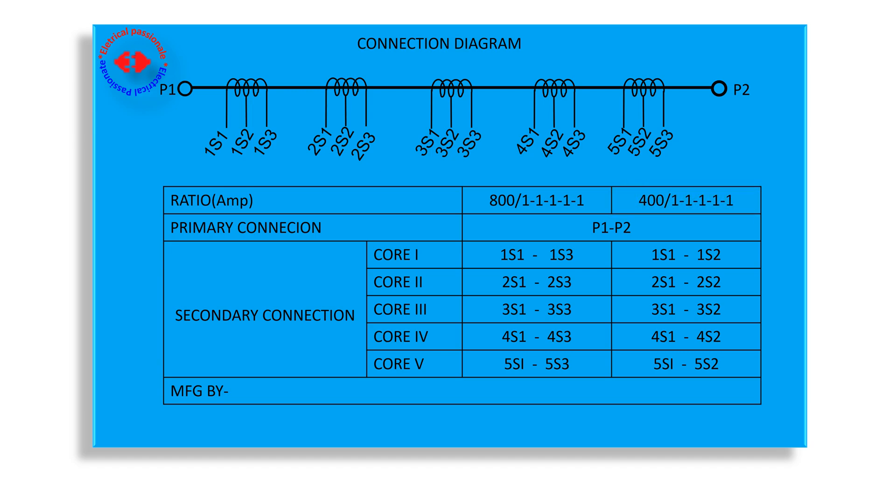Then, we have secondary terminals to connect the secondary core with particular ratio. For 800 ampere, we have to connect the CT secondary terminals to 1S1 and 1S3. Similarly, for 400 ampere, we have to connect with terminal 1S1 and 1S2. Terminal 1S1 stands for 1st core. 2S1 stands for 2nd core. 3S1 stands for 3rd core. 4S1 stands for 4th core. And 5S1 stands for 5th core.